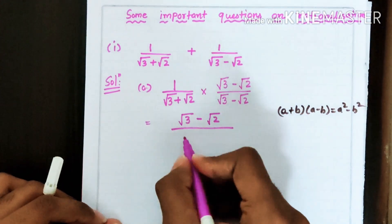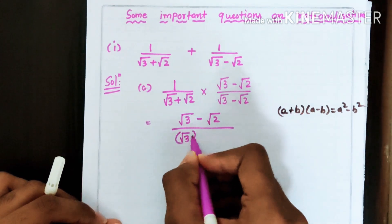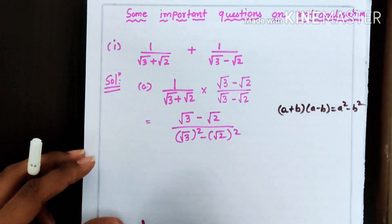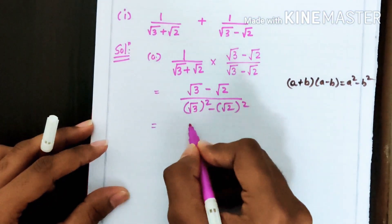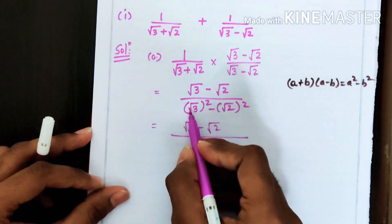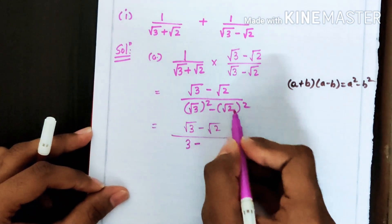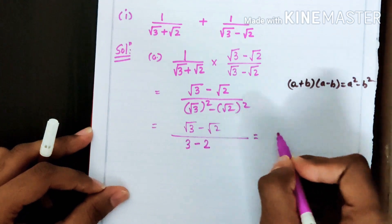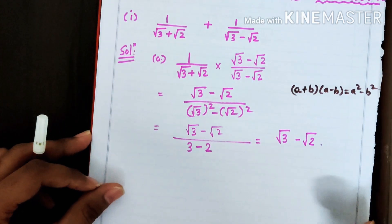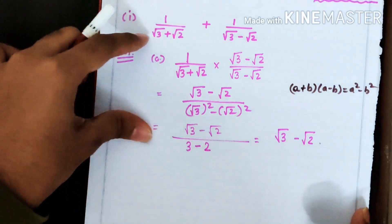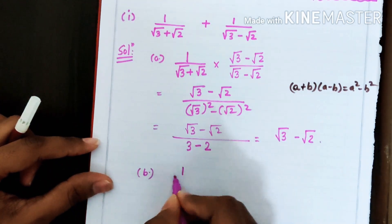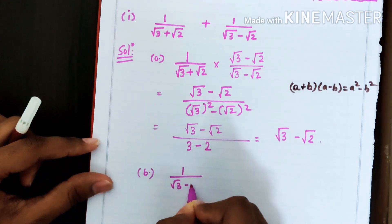So in the denominator it becomes √3² − √2², which gives 3 − 2 = 1. In the numerator both terms are unlike terms so they remain as is. Therefore our final answer for term A is (√3 − √2) upon 1, which is just (√3 − √2). Now let us solve term B: 1 upon (√3 − √2).